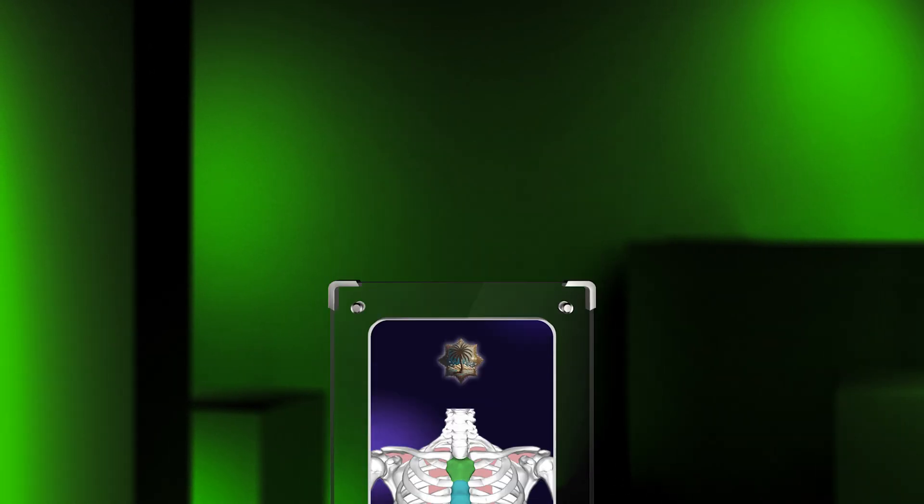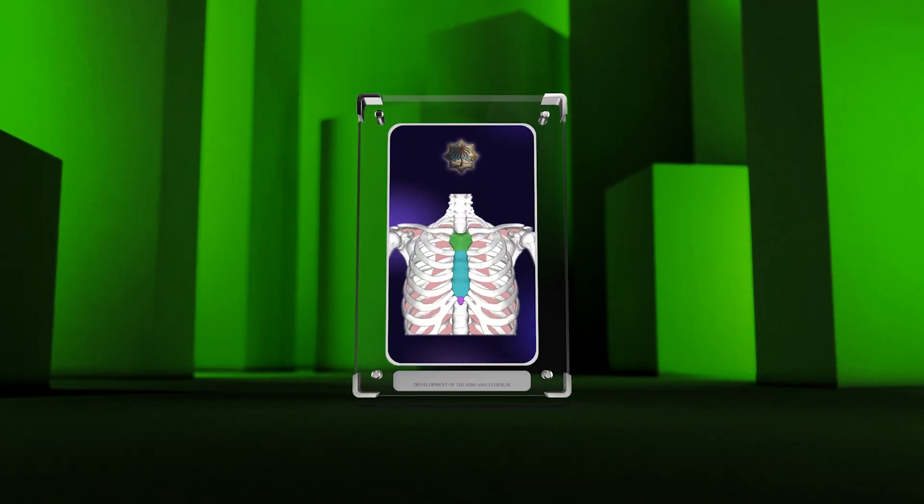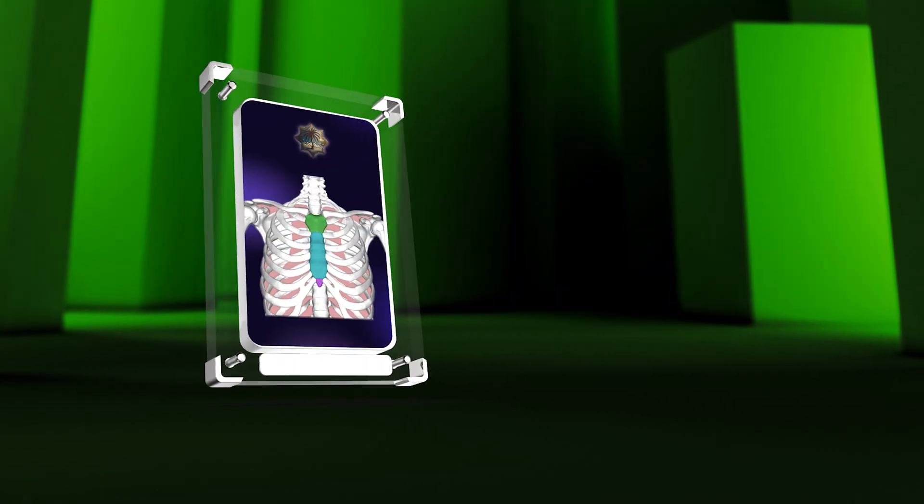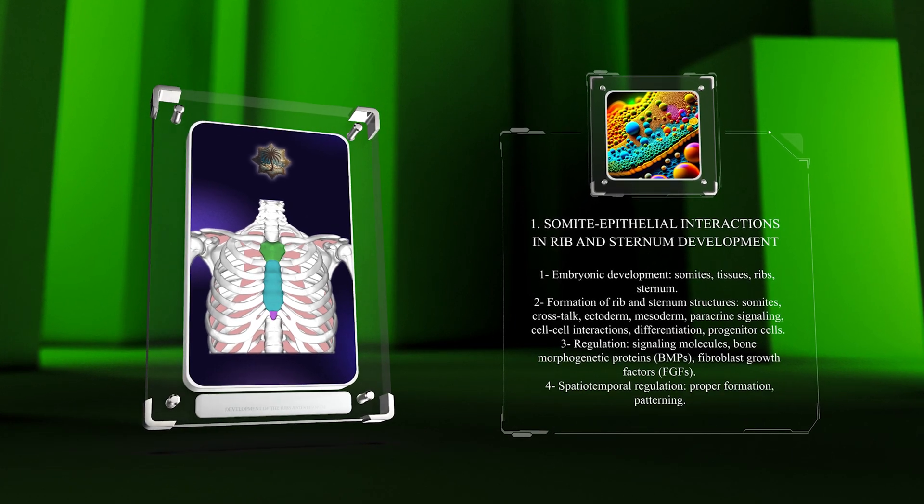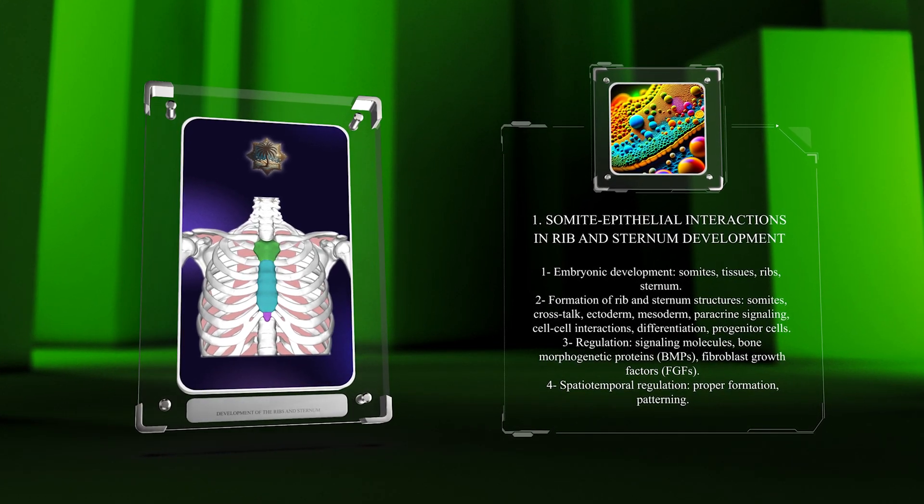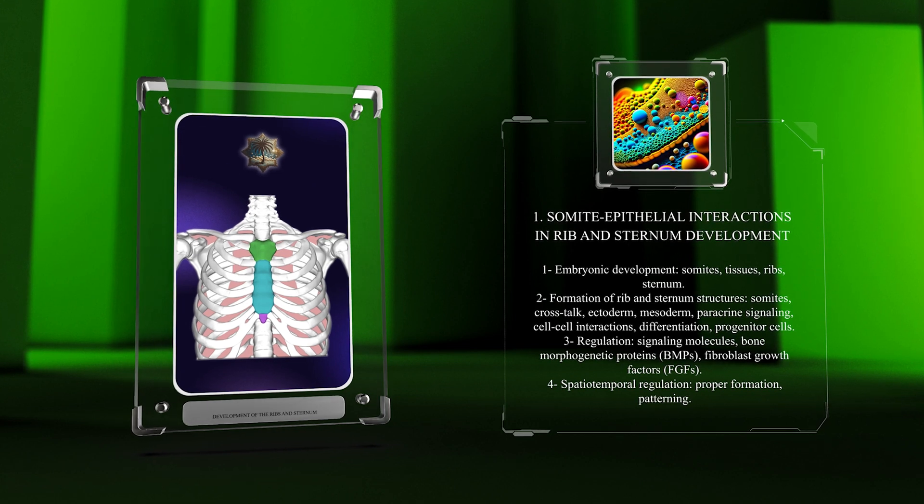During embryonic development, somites are transient structures that give rise to various tissues including the ribs and sternum. The formation of the rib and sternum structures involves intricate crosstalk between somites and other embryonic tissues, particularly the ectoderm and mesoderm.